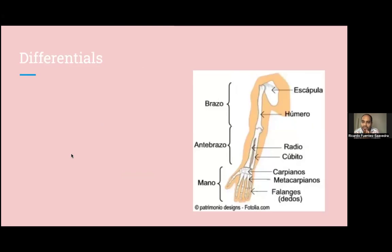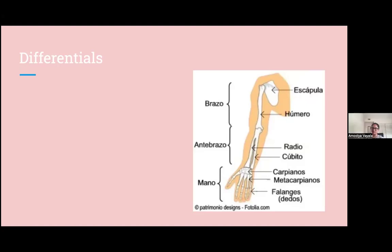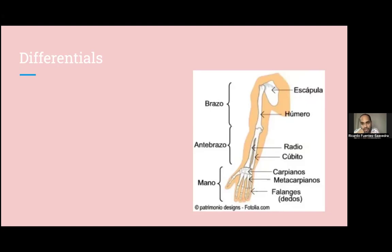What are the differentials for carpal tunnel syndrome? — An AIN nerve injury, like more specific to the anterior interosseous nerve. — Rheumatoid arthritis — which is also a factor that increases the chances of having carpal tunnel syndrome. — Diabetic neuropathy — neuropatía diabética — although it's more bilateral. All polyneuropathies in general can be differentials. — A fracture of a bone — una fractura de hueso — like a scaphoid fracture. There's also lunate dislocation, a distal radial fracture.